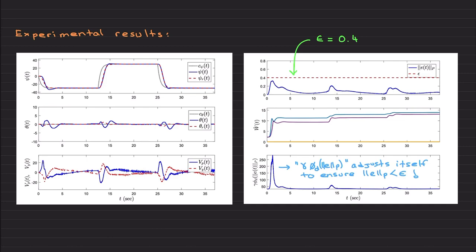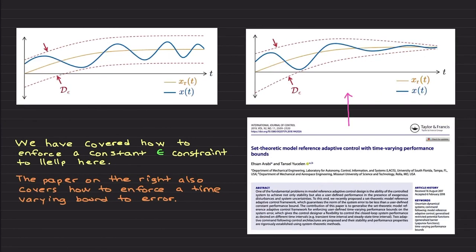Before I conclude, I would like to also cover a generalization of the material that I just covered. Let's look at here: this is our reference state x, let's think scalar, and here is the actual state. What I covered in this video, in this lecture, allows you so that your error x minus xr is always guaranteed to stay in this D epsilon set. So we have covered how to enforce a constraint epsilon to keep P norm of the error there. You can also make this a time-varying bound to achieve a precise performance like this, right? You start large, then you can narrow it gradually to more precisely make your system track a given command.